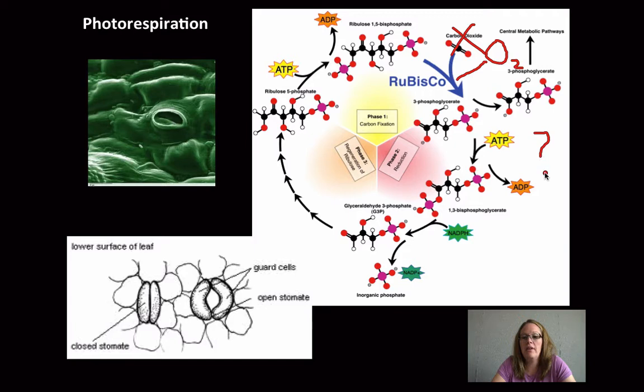There's no need to have them, and it actually costs the plant a lot of energy to break these down. So photorespiration is a problem. It makes a plant less efficient at fixing carbon.